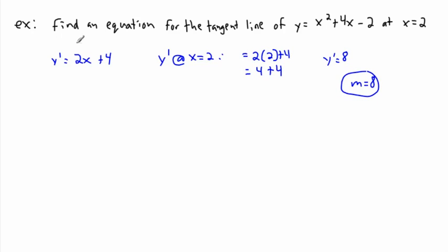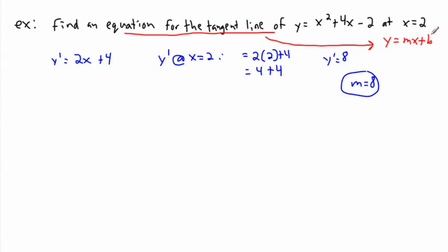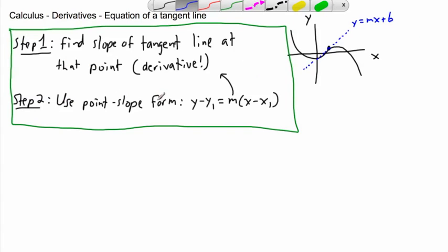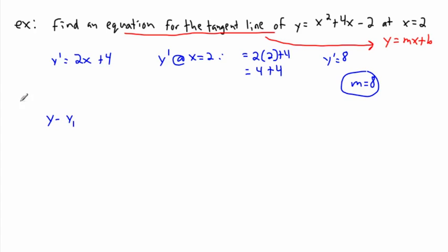So the slope M equals 8. I want the equation of the tangent line in the form Y equals MX plus B. I have M, now I need B. The next step is to use point-slope form: Y minus Y1 equals M times X minus X1. There are other ways of doing this, but this works nicely.